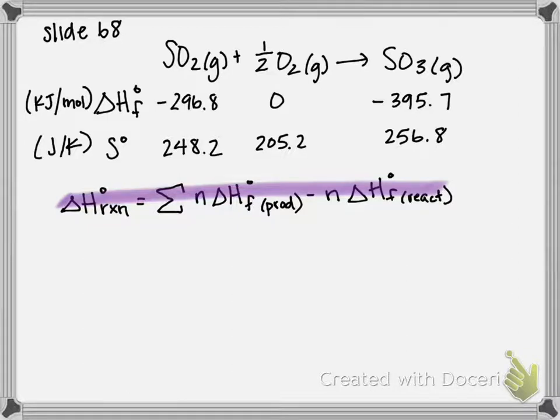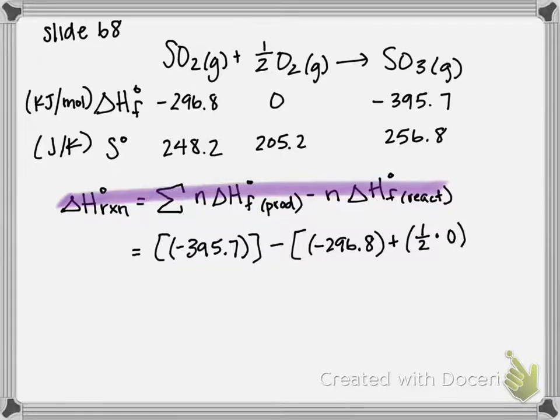If I look at my values written up here, we're going to start with our product. We have no additional moles so we don't have to multiply anything, so it's literally going to be negative 395.7 by itself, and we're going to subtract from that SO2, also just one mole, negative 296.8, and we're going to add that with one-half times 0 which gives us 0. So we're looking at negative 395.7 minus negative 296.8, and if we subtract those from each other we should get negative 98.9 kilojoules.